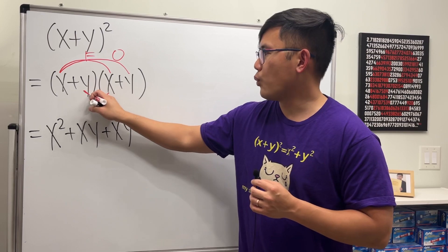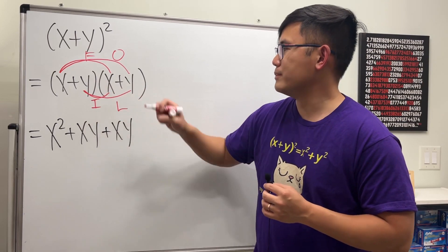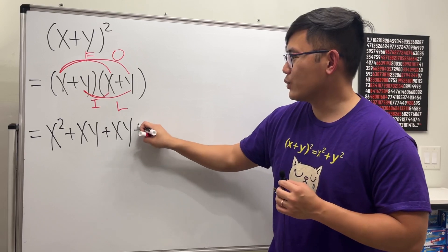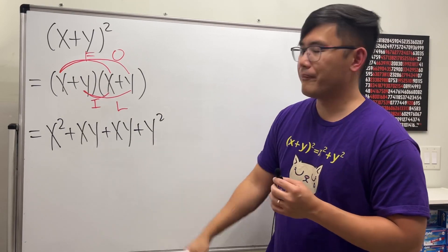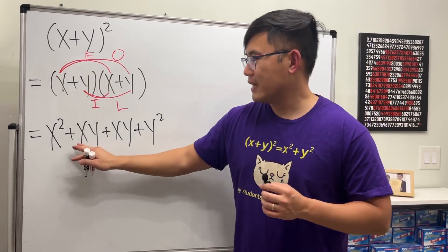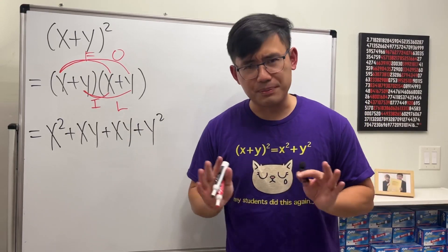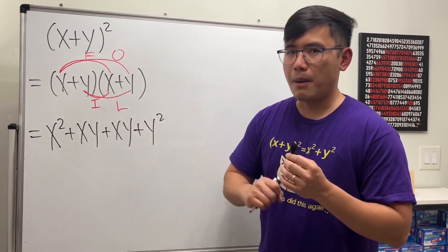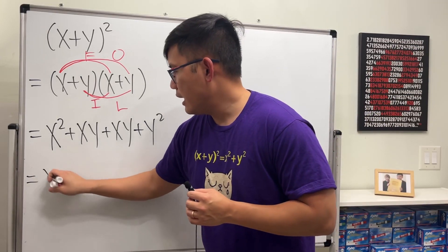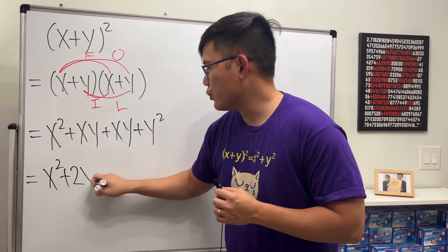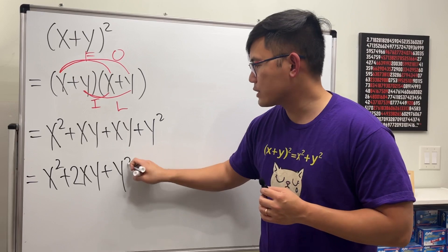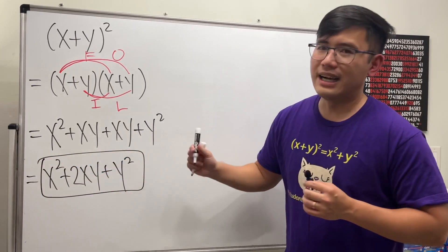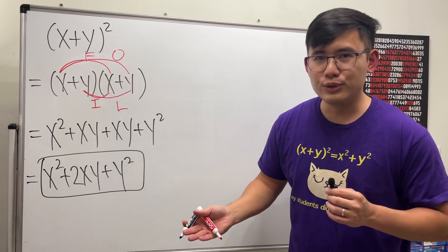Lastly, we take y times y — the Last term — and that's y squared. So we have x squared, then xy and xy. These are not like terms with x squared, but the two xy terms combine. Final answer: x squared plus 2xy plus y squared.